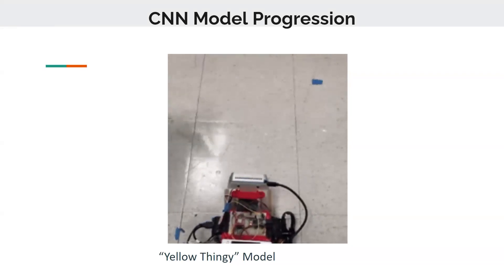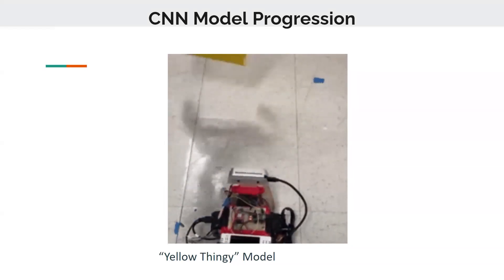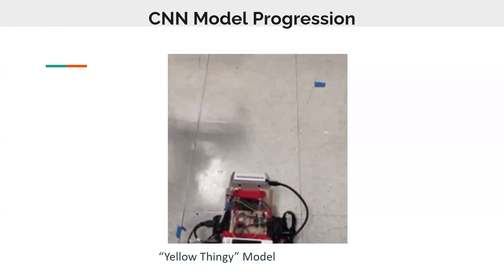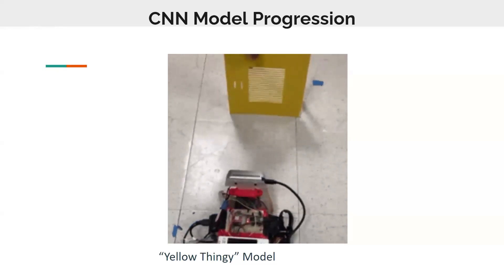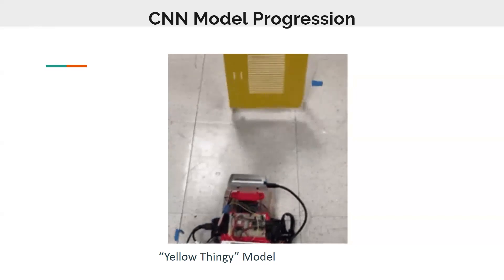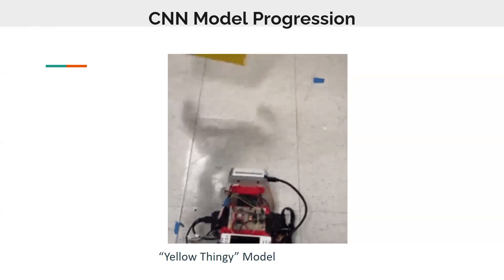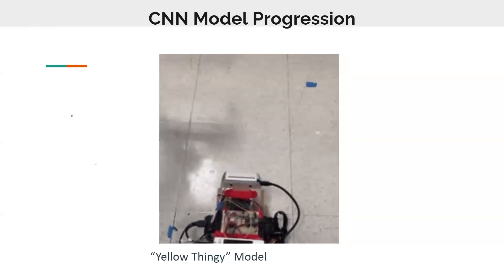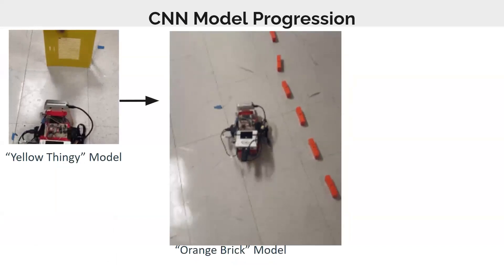So after many hundreds of iterations of models, you'll see here kind of our milestone models. So starting with our yellow thingy model here, which basically gives the car a curve to turn if the yellow object is present.